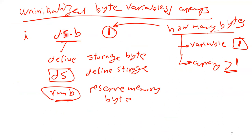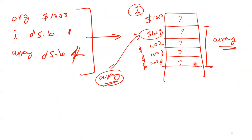If a variable is uninitialized, you have to write to it before you read it. If it is initialized you can read it first because it already has an initial value. In tomorrow's quiz I'm going to give you something like this — I'll ask you to draw the memory layout and tell me what address a variable like 'i' or 'array' will be replaced by in the program.